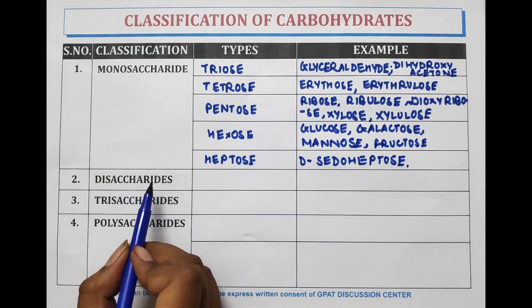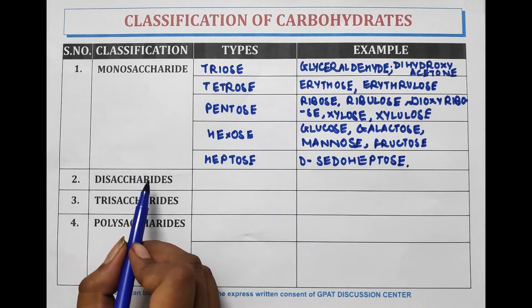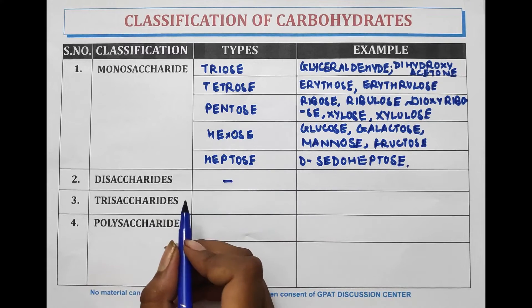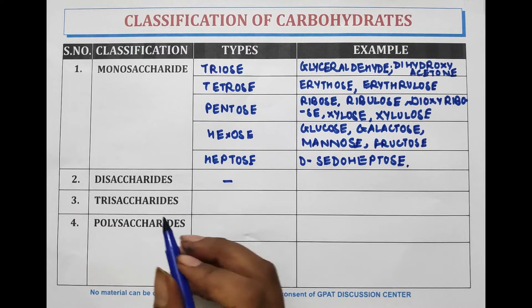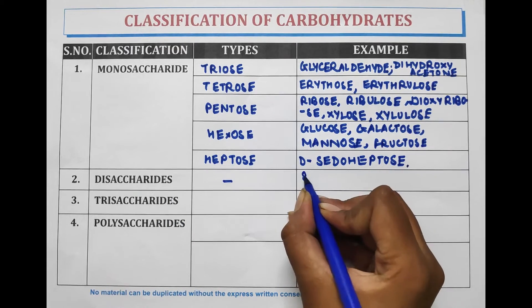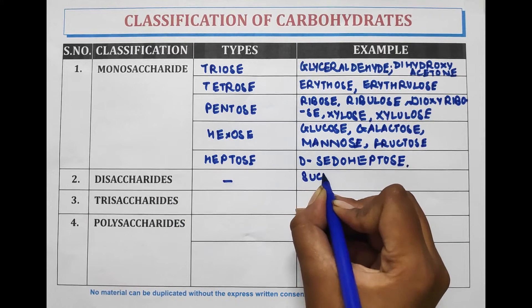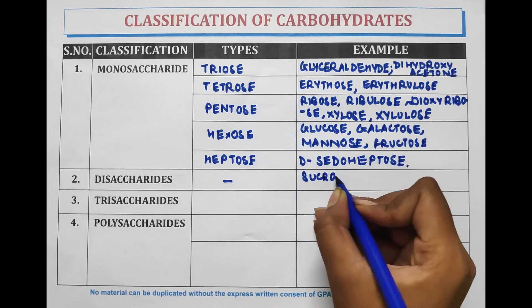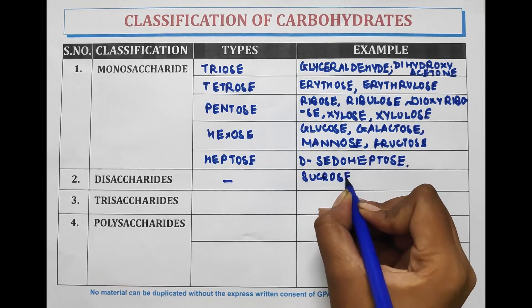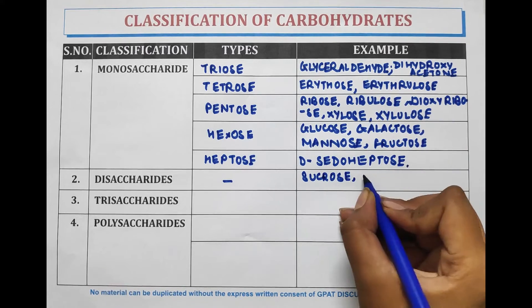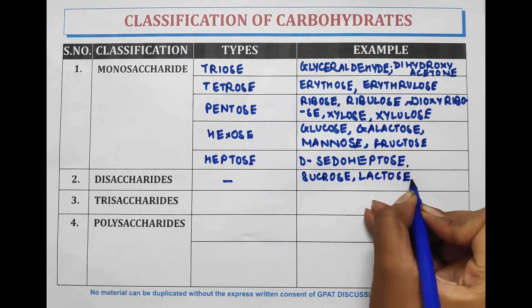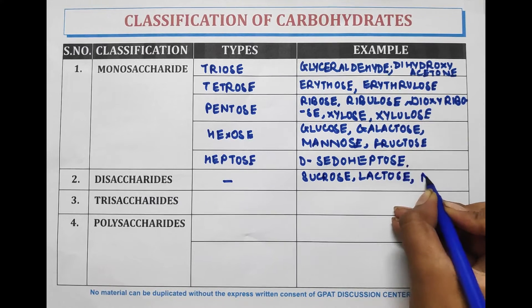Now let's discuss disaccharides. There is no subtype of disaccharide, and examples of disaccharide are sucrose, lactose, and maltose.